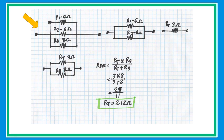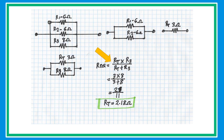In this problem, since R1 and R2 have the same value of 6 ohms, just simply get half of that value. Then redraw the circuit. Since we now have two resistors connected in parallel, use the special formula — product divided by sum — and substitute the values to get an equivalent resistance of 2.18 ohms.